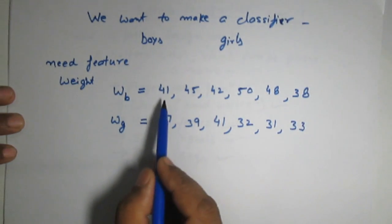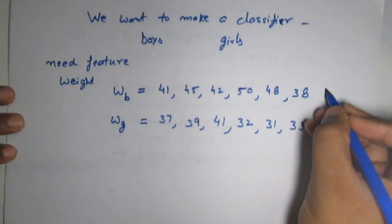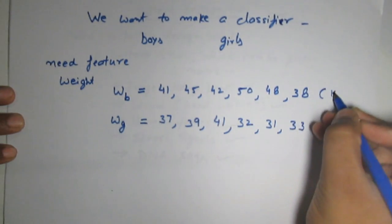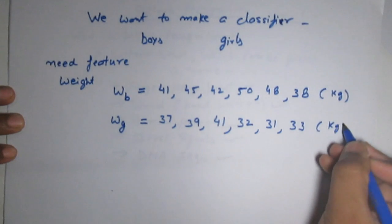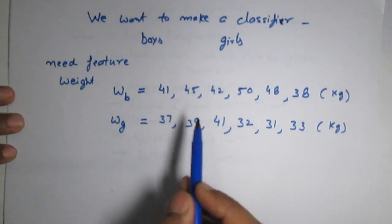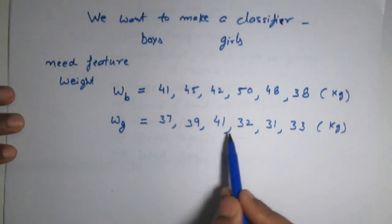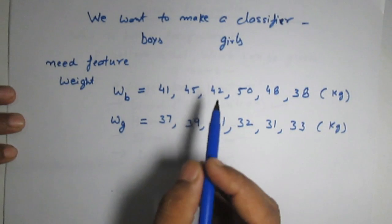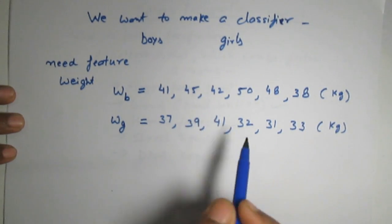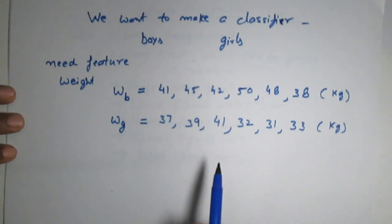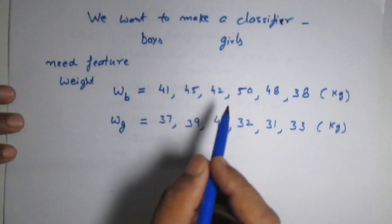Here we have taken six examples of boys. These are the weights in kilograms — some examples from the boys class and some examples from the girls class. On the basis of this classifier, we want to classify unknown data into one of the classes.